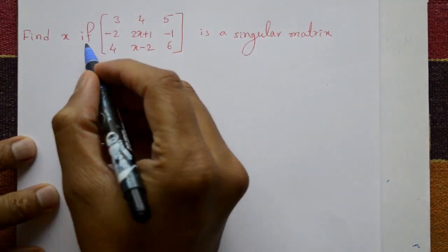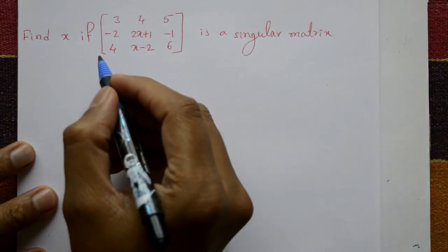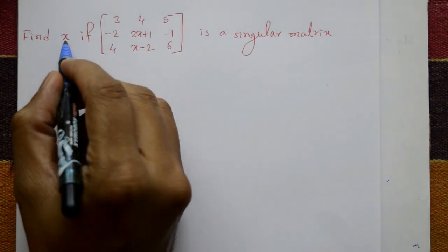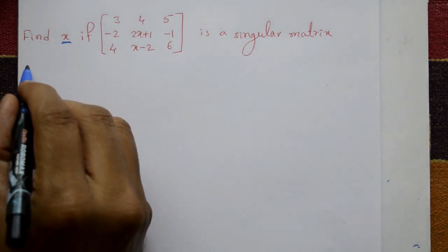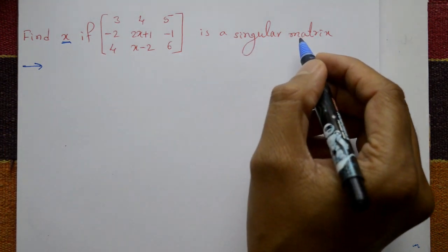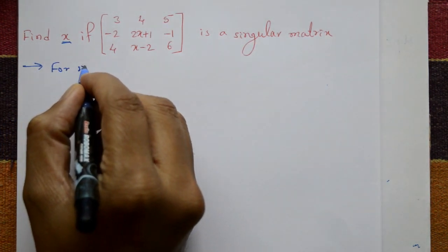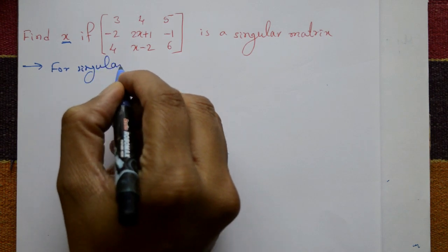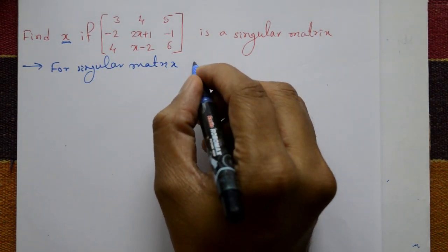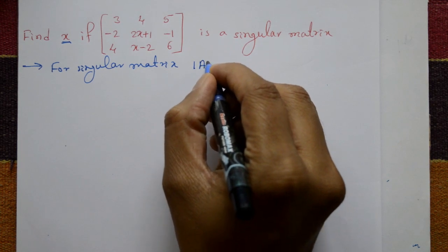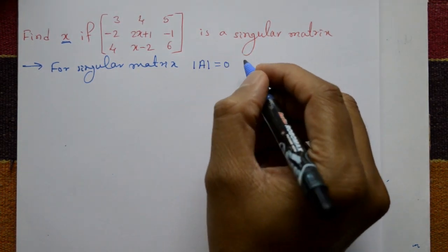Find x if the given matrix is a singular matrix. For a singular matrix, the determinant of A is equal to 0.